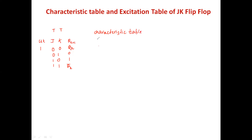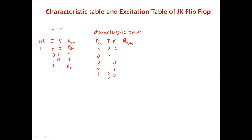Now let's construct the characteristic table. The inputs are the previous state and the present inputs, and the output is the next state. I will predict what the next state will be using different combinations of input and previous output. Since I have three inputs, I will have eight combinations of inputs.